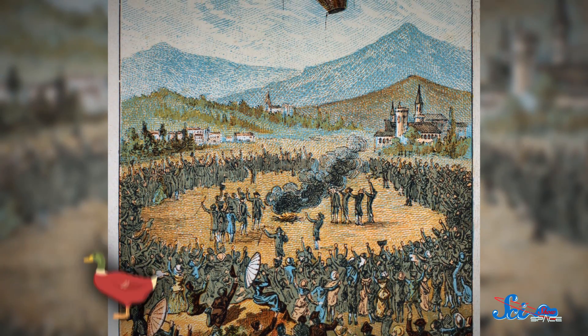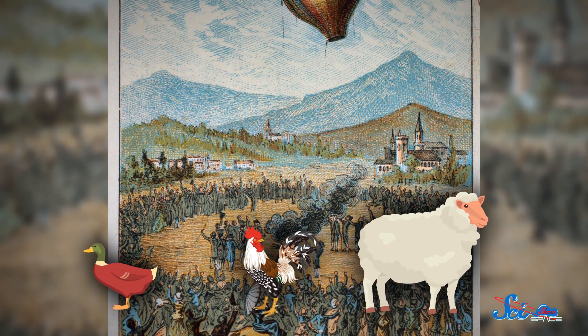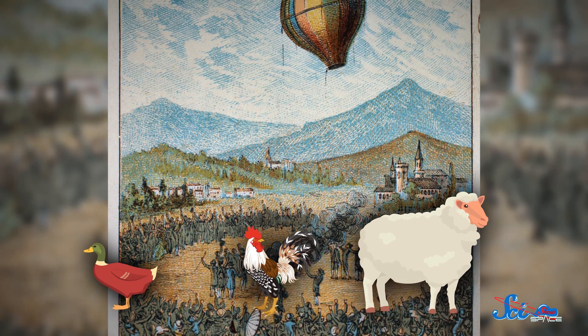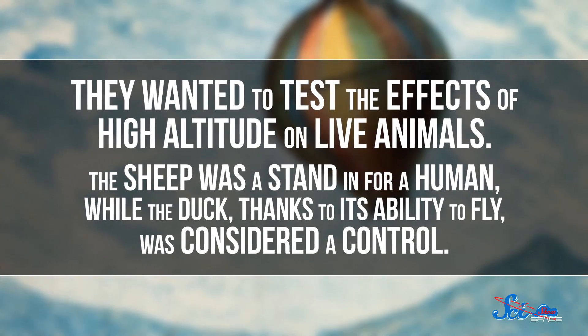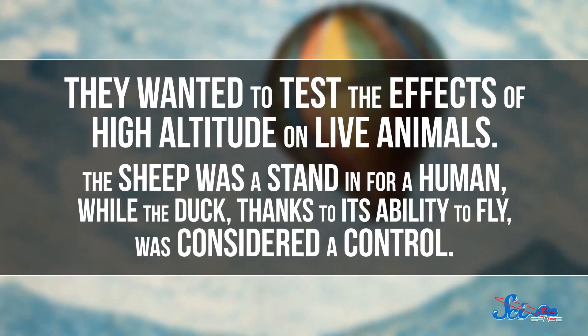The Montgolfier brothers sent a duck, a sheep, and a rooster up as the first passengers to ride in a hot air balloon in 1783. They wanted to test the effects of high altitude on live animals. The sheep was a stand-in for a human, while the duck, thanks to its ability to fly, was considered a control. It would be a long time before we'd get around to sending anything beyond our atmosphere, though.